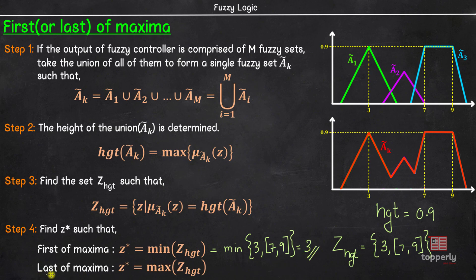Similarly, as per last of maxima, the defuzzified value is given by z* = max({3} ∪ [7, 9]), and this is equal to 9. I hope this method is clear to you.